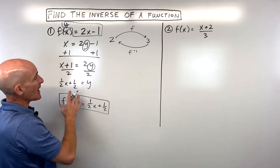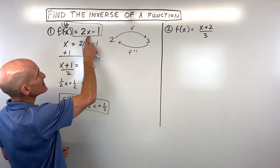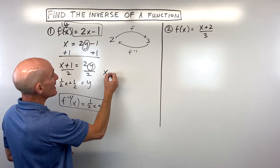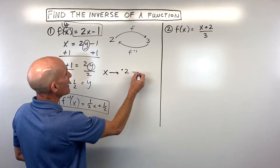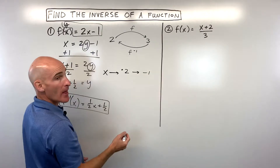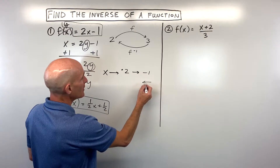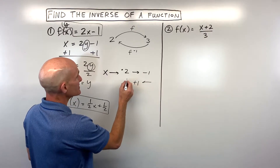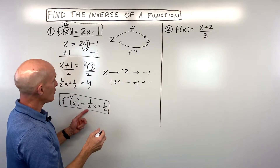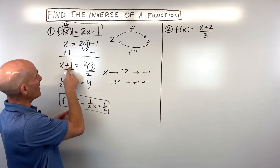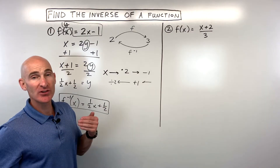There's also an informal way of looking at this. If we think of x as our input, we're multiplying by 2 and then subtracting 1. To reverse those steps, instead of subtracting 1 we add 1, and instead of multiplying by 2 we divide by 2. So our inverse adds 1 then divides by 2 — we're just reversing those steps.